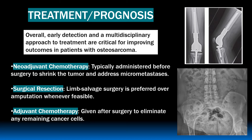When it comes to treatment and prognosis of osteosarcomas, early detection and a multidisciplinary approach are critical for improving outcomes. The three main therapies are: neoadjuvant chemotherapy, typically administered before surgery to shrink the tumor; surgical resection or limb salvage procedures, which are preferred if possible; and adjuvant chemotherapy given after surgery to eliminate any remaining cancer cells.